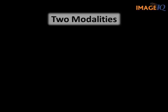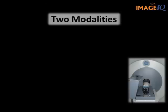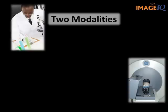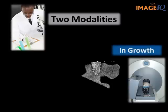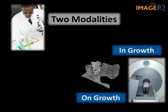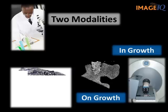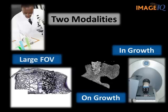We utilized two different modalities to assess bone growth: micro CT imaging and large field of view microscopy. Initially, micro CT imaging and subsequent analysis using our customized algorithms provided a comprehensive, volumetric view of bone growth in and around the entire implant. Next, the specimen was then histologically cross-sectioned and imaged using a large field of view microscope for 2D analysis of bone in growth at submicron resolution.